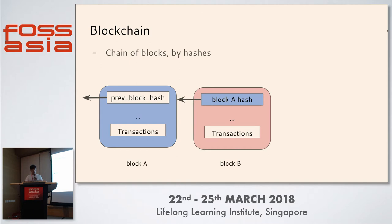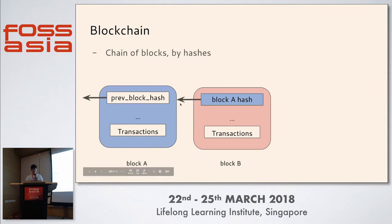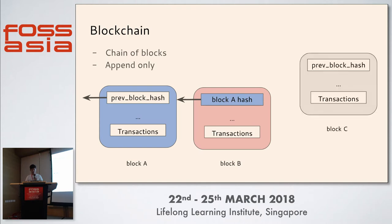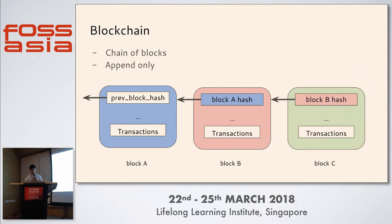Looking at this blockchain: block A, block B — block B's previous block hash is set to block A's hash, so it is chained. And it is append-only, so if you want to make a new block, you must append to the existing blockchain. Assume there is a block C: you must set the previous block hash as the latest block, and it will append to the existing blockchain.